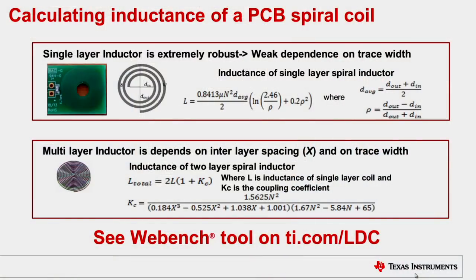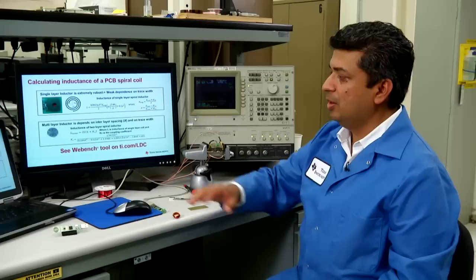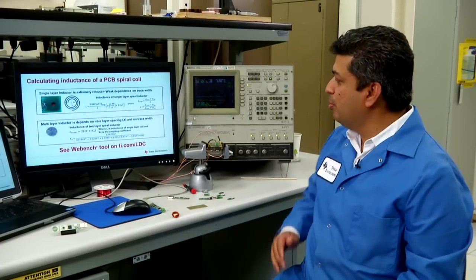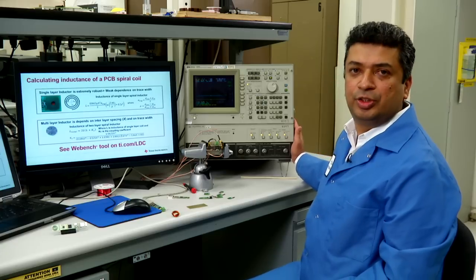For PCB inductors, you have a couple of options. Rp min and Rp max can be calculated using closed form equations. Here are some of the equations that can be used for the coil that's on the PCB. For coils which have extremely complex physical structure, you may actually need to use an instrument to measure it.